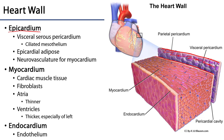We call that the epicardium. Between the epicardium and the parietal pericardium is the pericardial cavity. There's nothing in it except a little bit of filtrate, about 10 to 15 milliliters of it. That filtrate is produced by the epicardium, which is ciliated mesothelium.